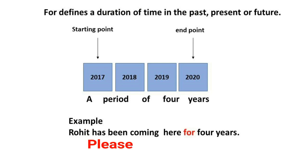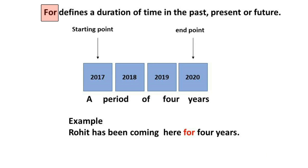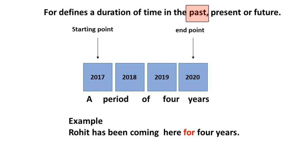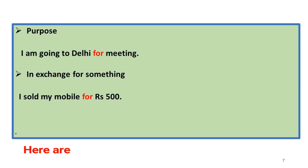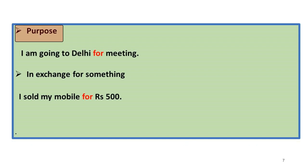Please remember: 'since' refers to a particular time in the past, but 'for' refers to a duration of time in the past, present, or future. Here are some more uses of the preposition 'for'. The preposition 'for' is used to show purpose. For example: 'I am going to Delhi for a meeting.'